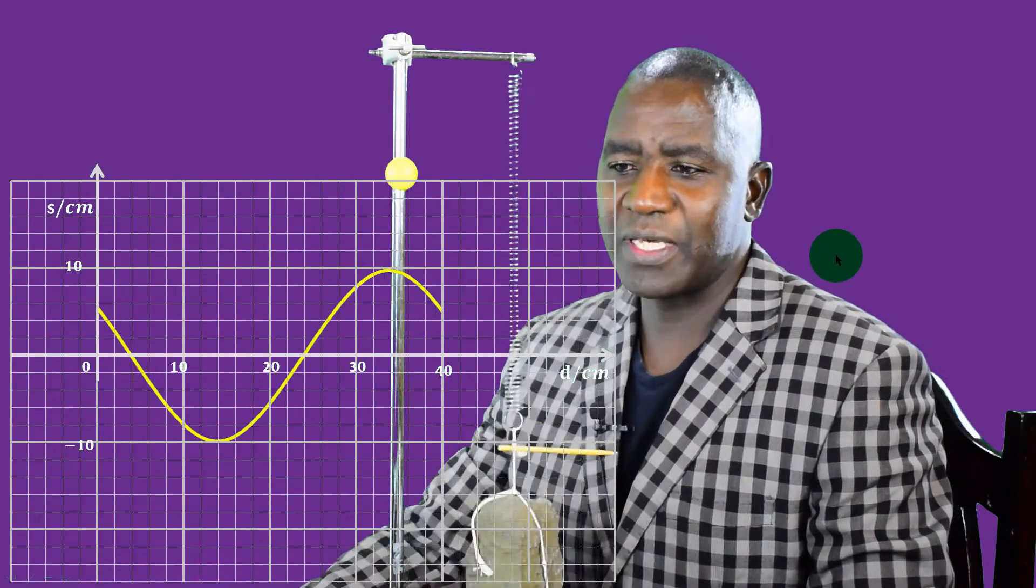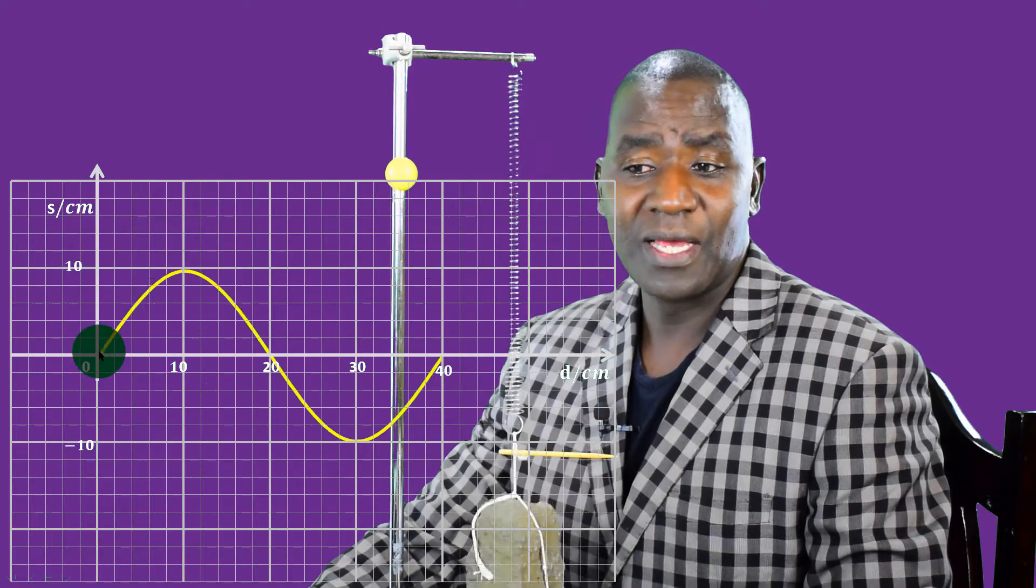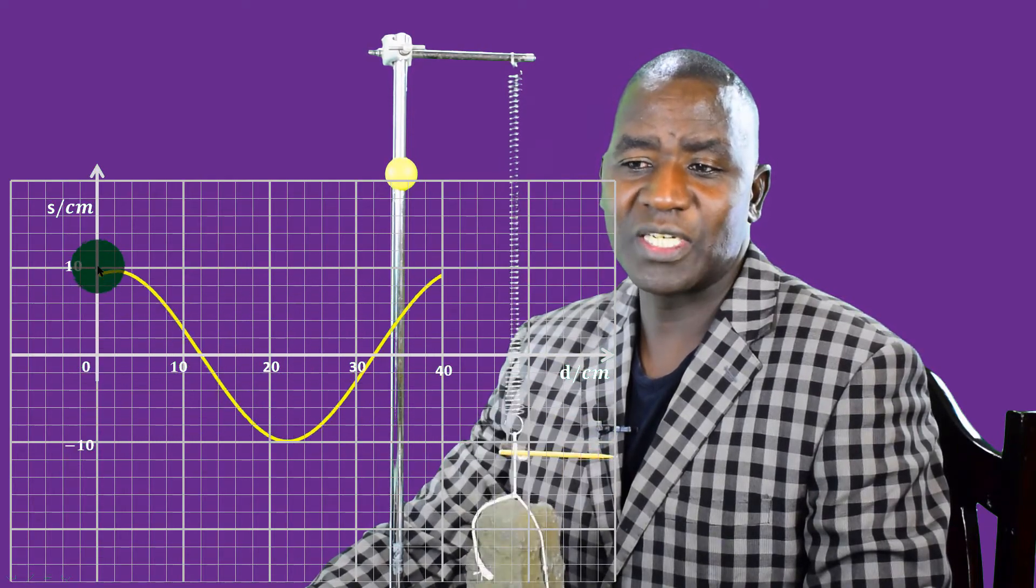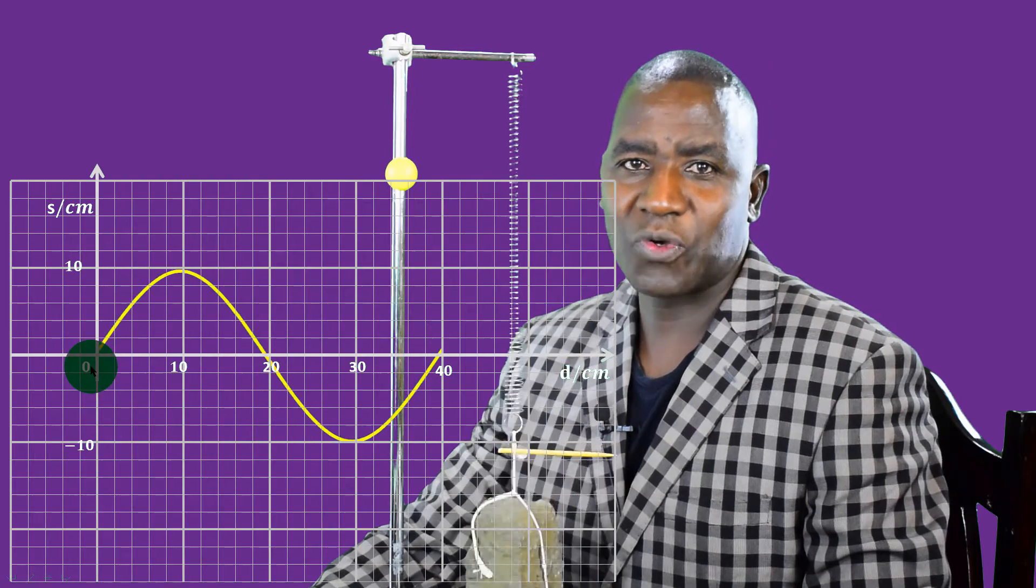Now, this kind of motion is what I have in this graph here. You can see that in this graph, I've got a displacement distance graph. Here, the distance continues to increase, but the displacement oscillates from minus 10, 0, positive 10, 0, minus 10, 0, positive 10, and so forth.